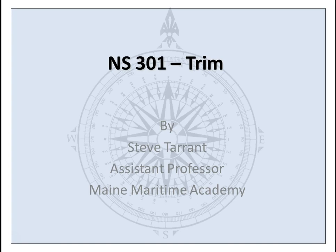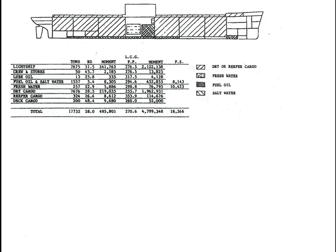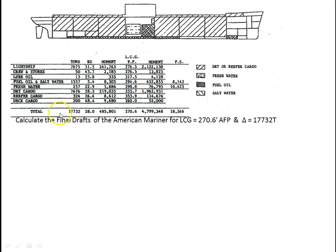This method works in all situations. This is some data for the American Mariner, and in this problem a lot of the work has actually already been done for us. The KG has been calculated here, and the LCG has been calculated, so we have distances and moments. The question is: calculate the final drafts of the American Mariner if it has an LCG of 270.6 feet and a displacement of 17,732.